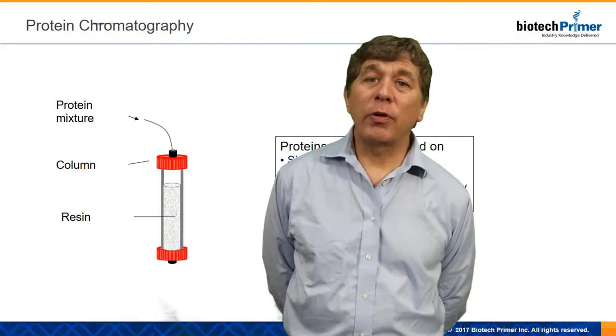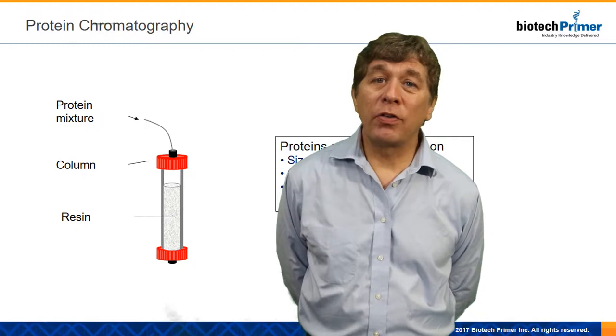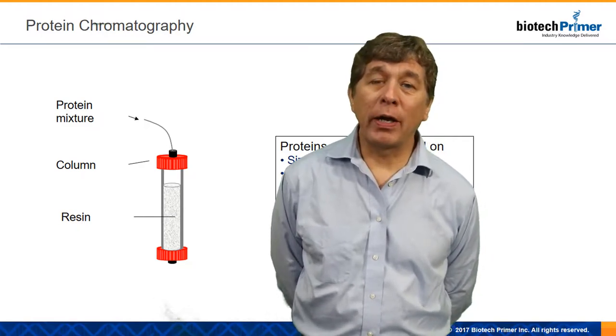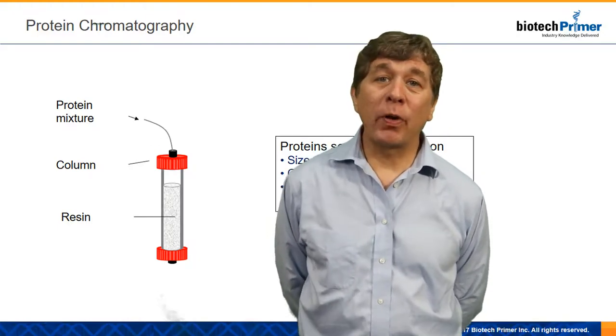The primary way that we do this is using something called protein chromatography. Chromatography has been around really since the early 1900s and chromatography is a way to separate one molecule from another. In this case, the molecules that we are separating are protein molecules.